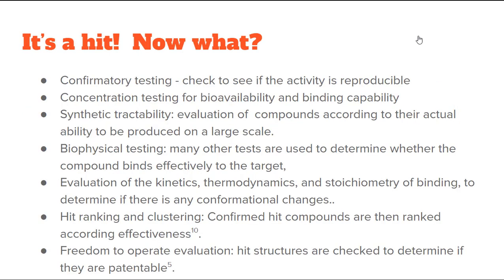So we have our hit — now what? There are several steps: confirmatory testing to check if the activity is reproducible and can be made in lab; concentration testing for bioavailability and binding capability; synthetic tractability — evaluating whether the compound can viably be produced at larger scale; biophysical testing to determine whether the compound binds effectively to the target; evaluation of kinetics, thermodynamics, and stoichiometry of binding; checking for conformational changes that might make the drug inactive or harmful. Then hit ranking and clustering — confirmed hits are ranked by effectiveness — and freedom-to-operate evaluation, where hit structures are checked to determine if they are patentable.